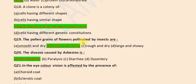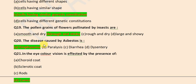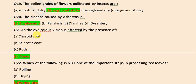The pollen grains of flowers pollinated by insects are rough and sticky. The disease caused by asbestos is emphysema. In the eye, color vision is affected from the presence of cones.